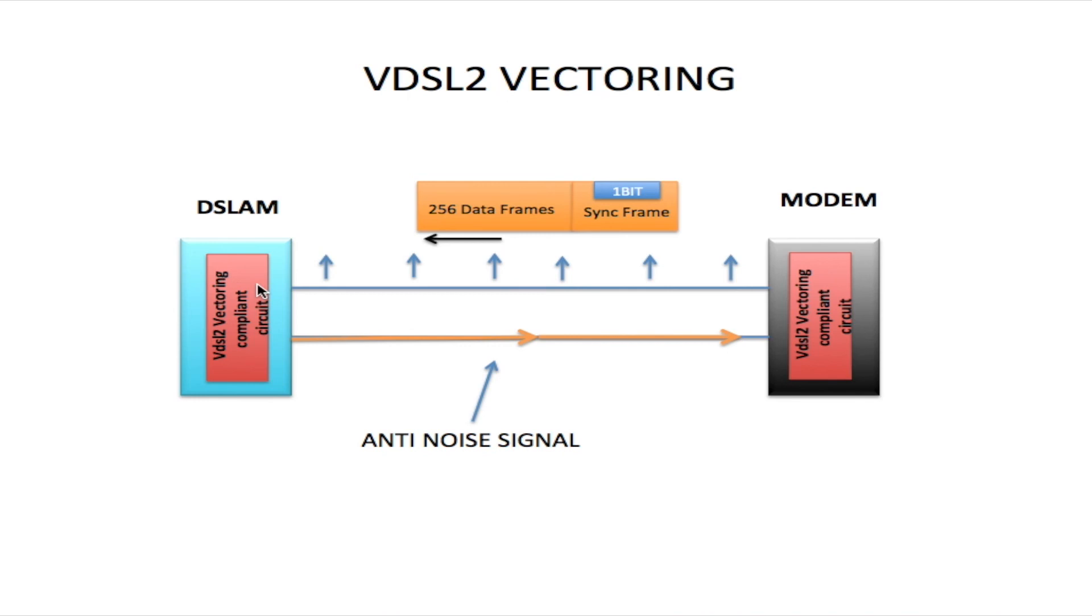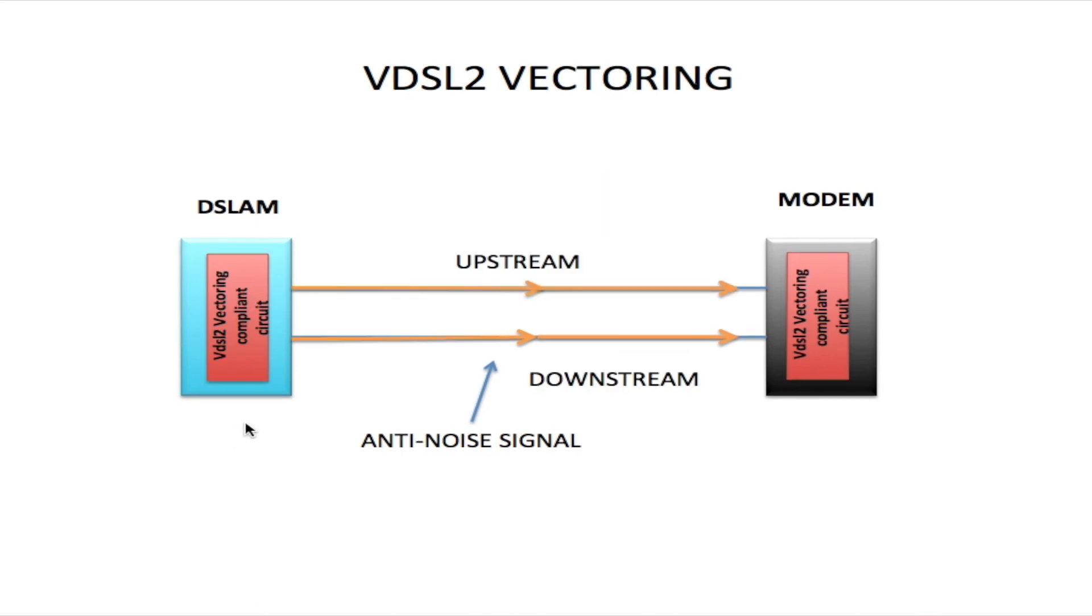The DSLAM would extract the one bit and calculate an anti-noise injection for the received side. Once the anti-noise injection has been formulated, it is injected on the upstream side of the line, cancelling all crosstalk. So now we have a line free of crosstalk.